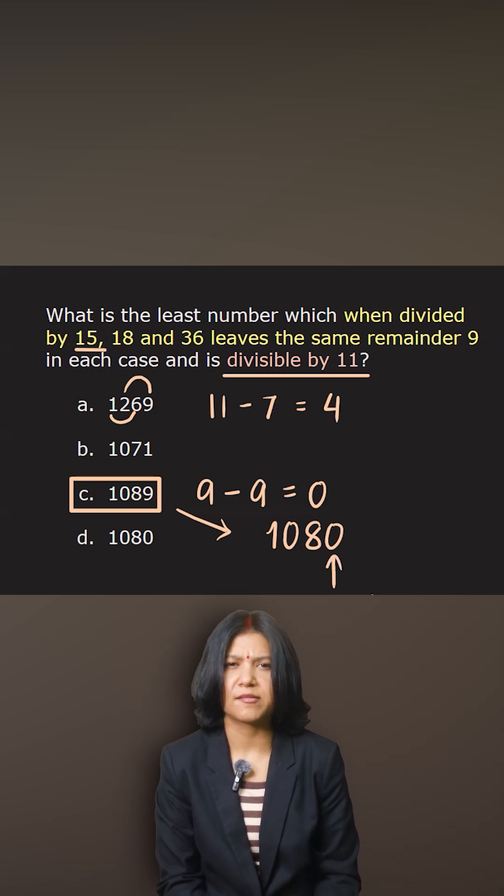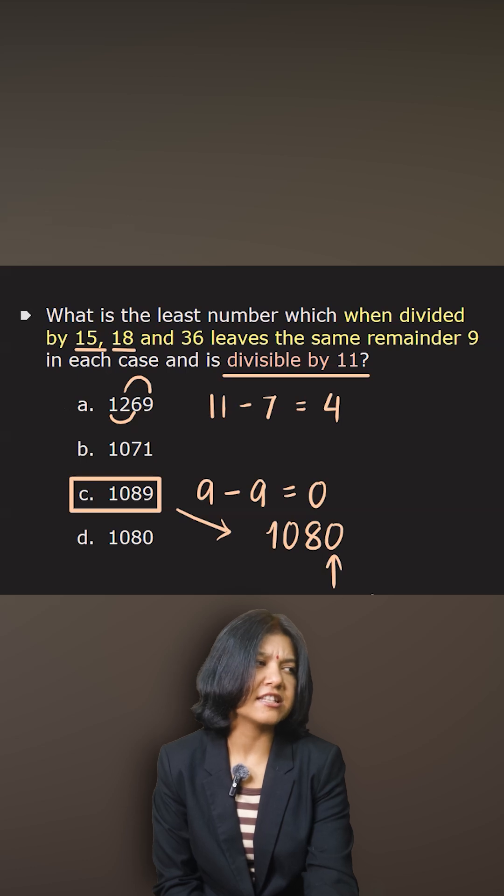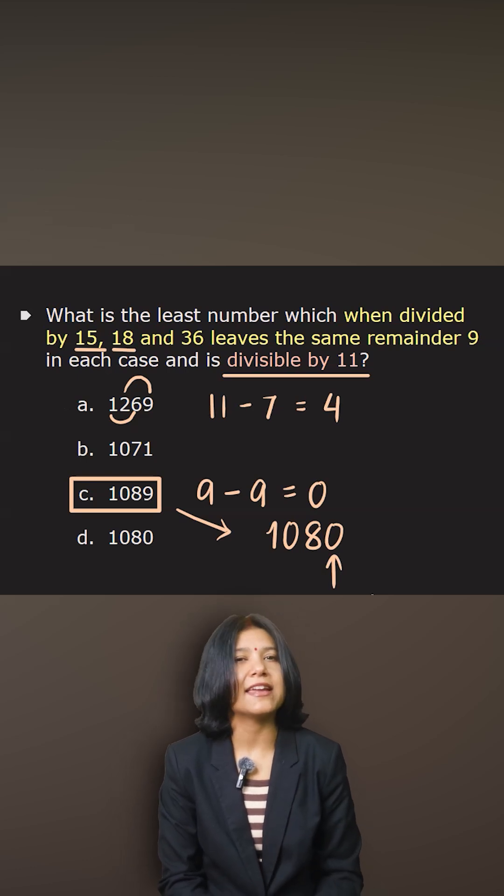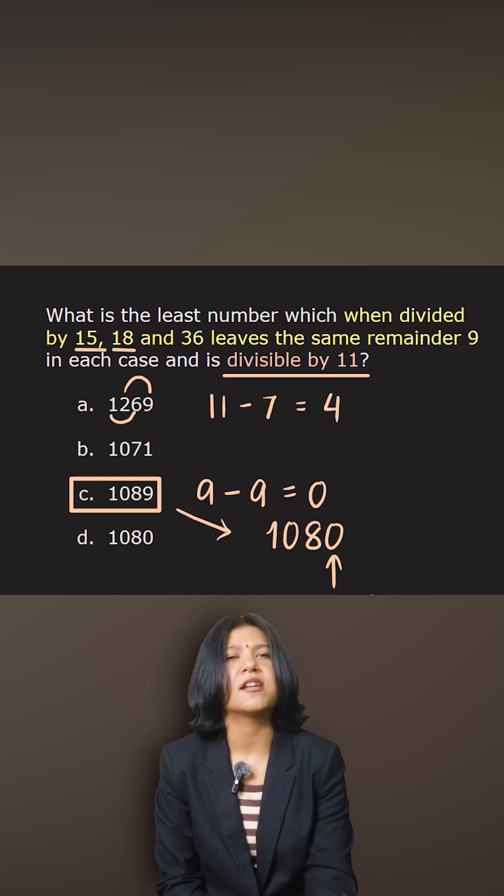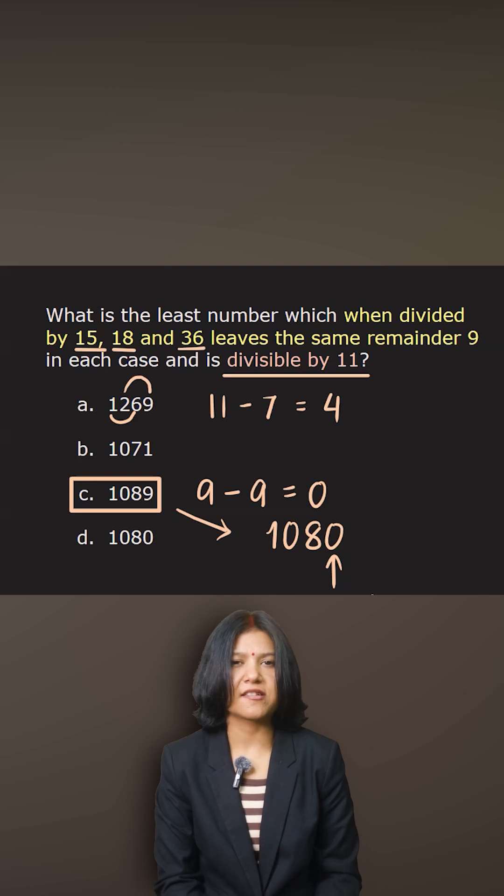The same thing for 18: if a number is to be divisible by 18, you want it to be divisible by 9 and 2. So again, 9 is going to divide this and the number is even. Same for 36—it will definitely divide because you can split 36 into two factors, 9 and 4.